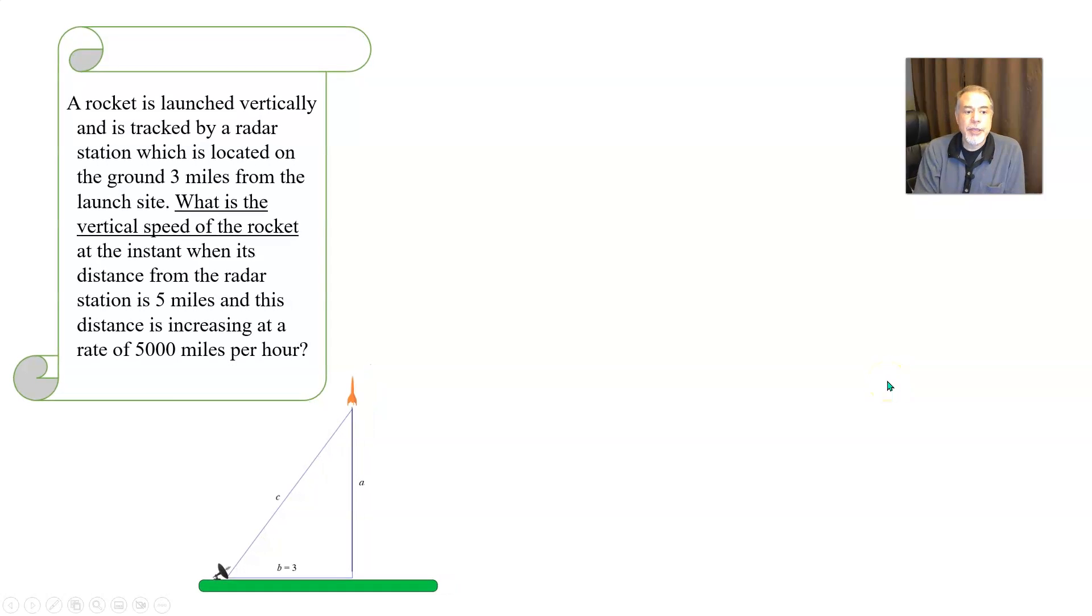Now, the equation that tells how these things are related to one another comes from the Pythagorean theorem. Since this is a right triangle, we can use the Pythagorean theorem, but first let's pay attention to what we're trying to find here.